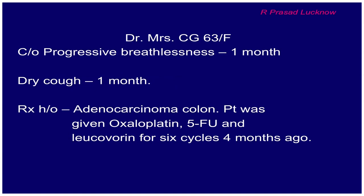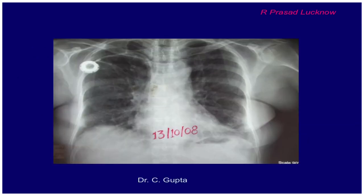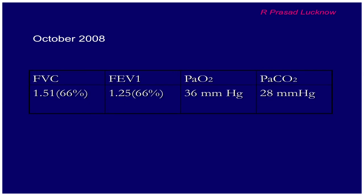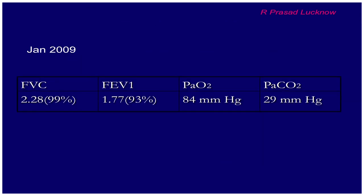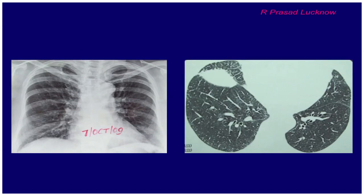This is another case — a doctor, about 63 years old, female, diagnosed with adenocarcinoma of the colon and given oxaliplatin, 5-FU, and leucovorin for 6 cycles 4 months ago. She developed cough and breathlessness. X-ray was near normal; spirometry showed severe restrictive abnormality. CT thorax confirmed drug-induced pulmonary fibrosis. The good news is that since the drugs were already stopped, we used some steroids and she became well — pulmonary function returned to 87% FVC and CT became normal. Drug-induced fibrosis, if you stop the drug and give steroids, is a treatable disease.